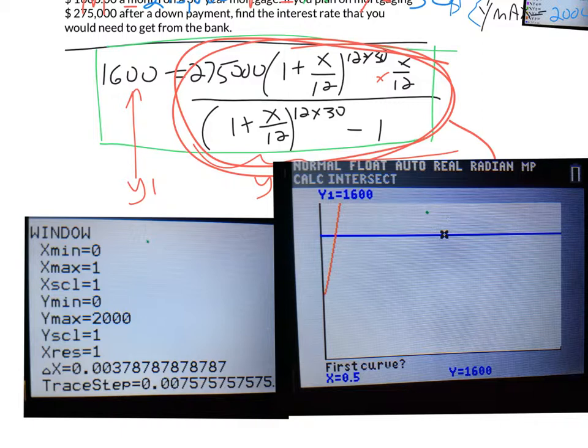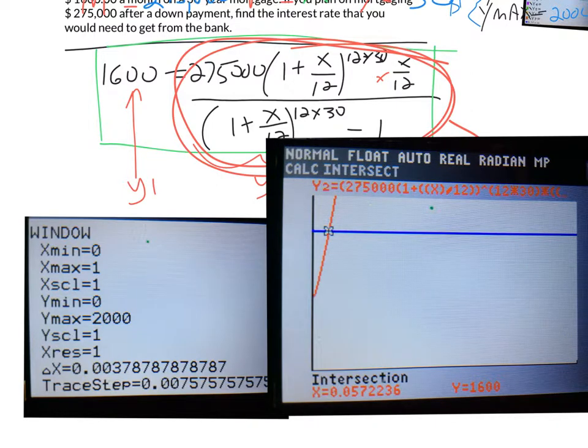But here's what my calculator now looks like after about 10-15 seconds of spinning and thinking. It's now giving me the prompt for the first curve, second curve, and guess. And when I press enter three times, here's what my point of intersection turns out to be. 0.0572236, 1600.